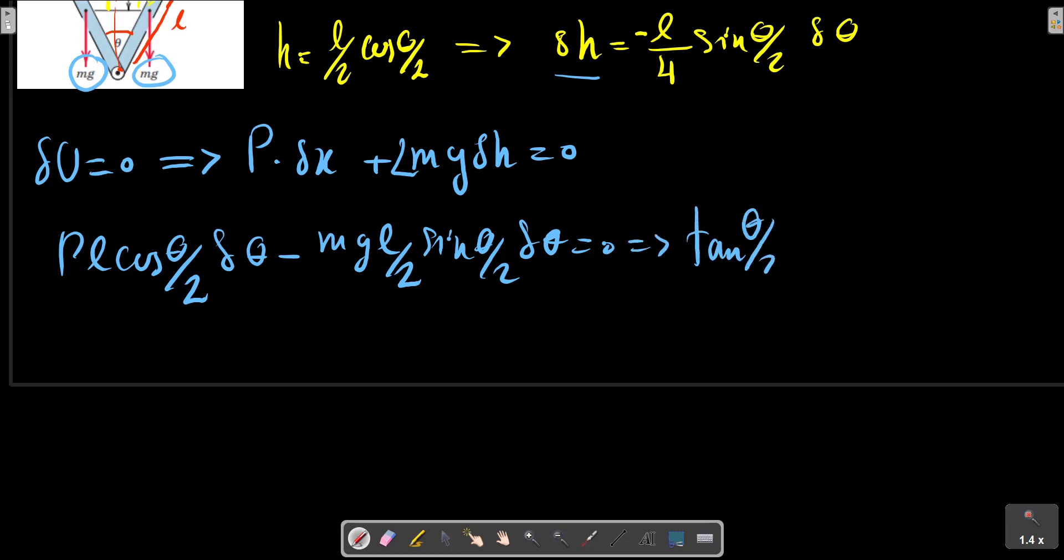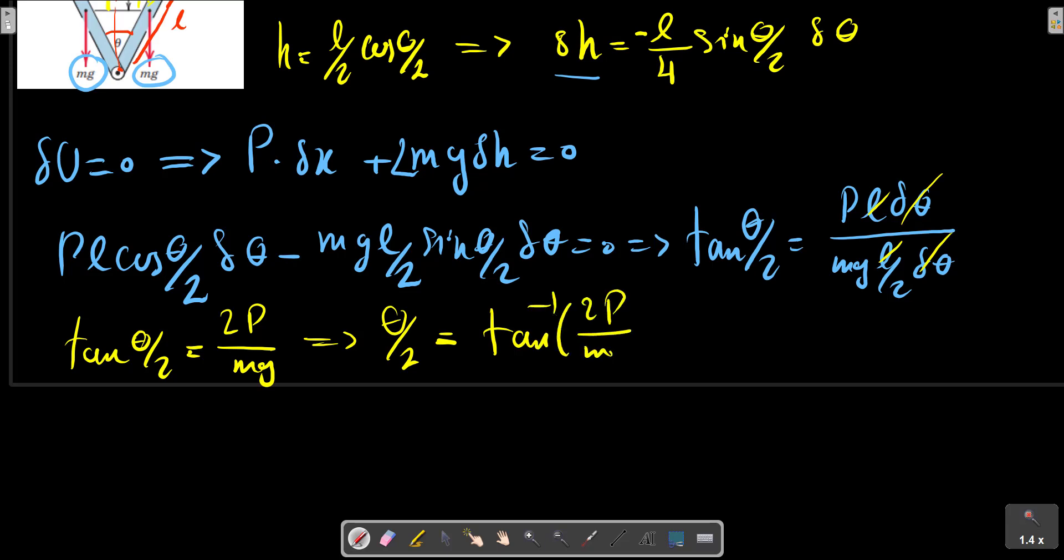So tangent theta... P times l over mg times l over 2... tangent theta squared equals 2P over mg. Therefore theta equals the inverse tangent of the square root of 2P over mg. This is the angle theta required for equilibrium.